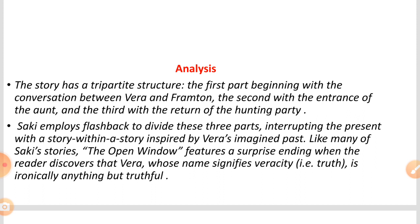Saki, the pen name of the writer H.S. Munro, employs flashback to divide these three parts, interrupting the present with a story within a story. Inspired by Vera's imagination, there is a flashback. The narrative technique is that in the present story we see a story within a story — how Vera imagines that three persons went for hunting and had not come back because of their untimely death.